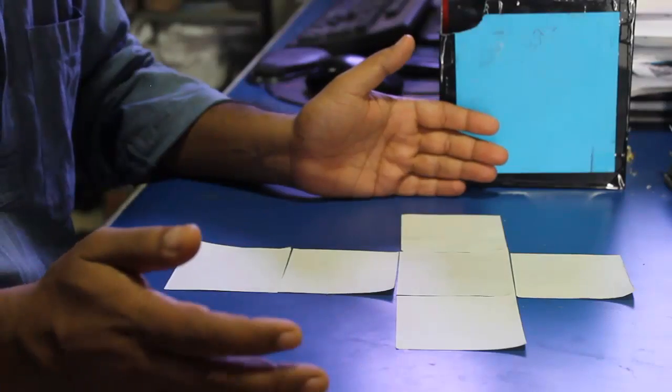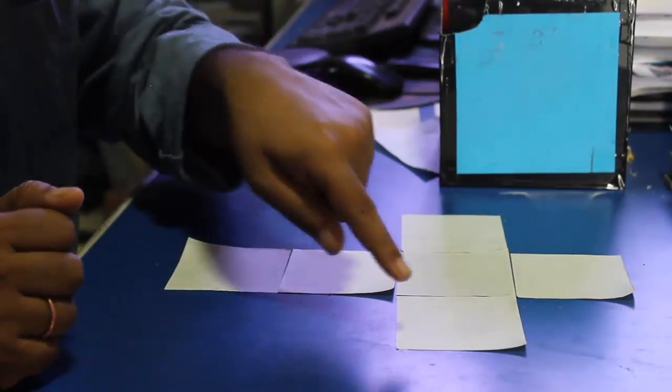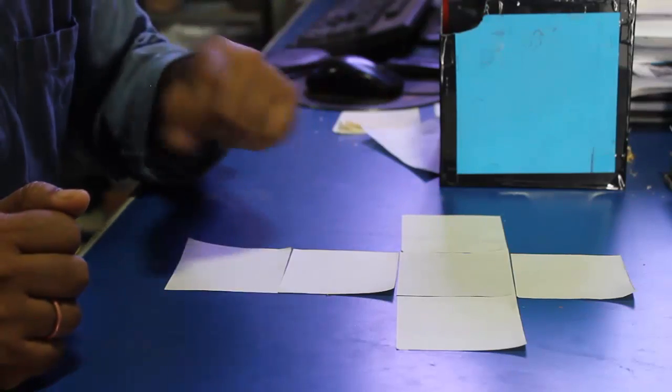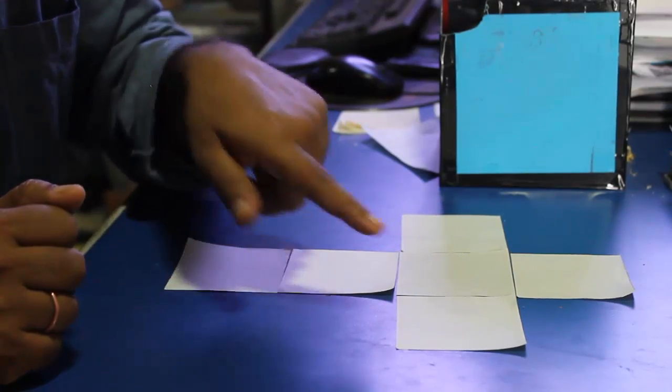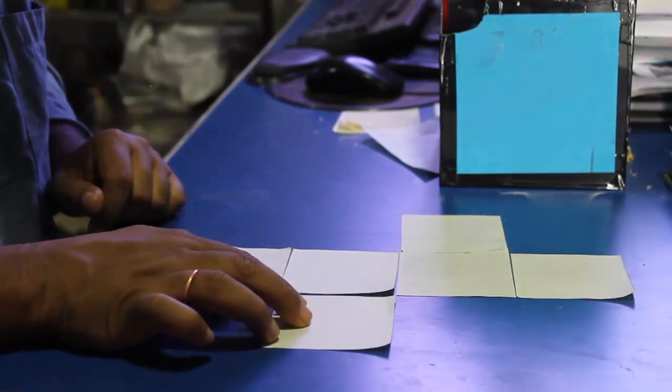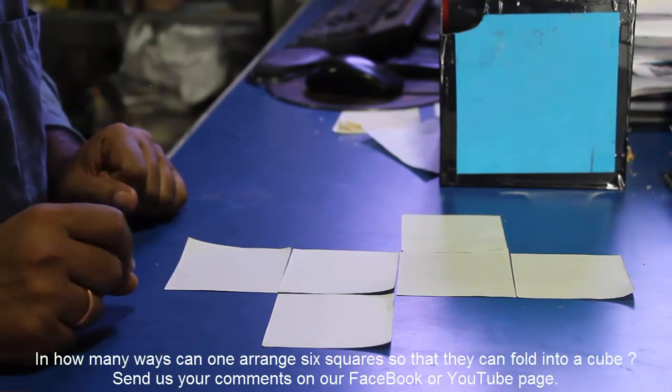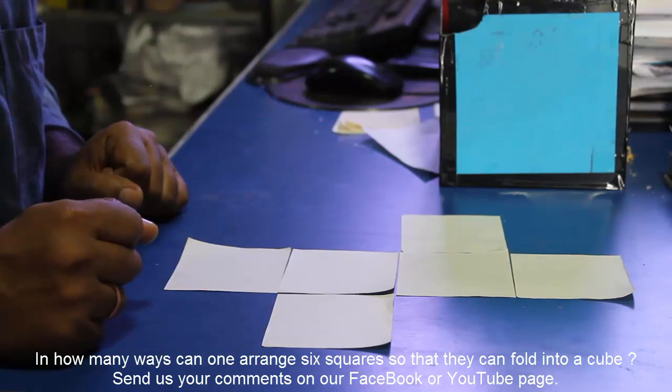We had six pieces of acrylic which we folded into a cube, and we had arranged the six pieces like this. Are there any other ways in which we can arrange the six pieces so that they still fold into a cube? For instance, if we had arranged the pieces like this we would still fold a cube. What are all those ways in which we can arrange the six pieces so that they fold into a cube?